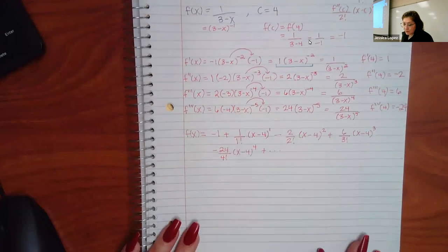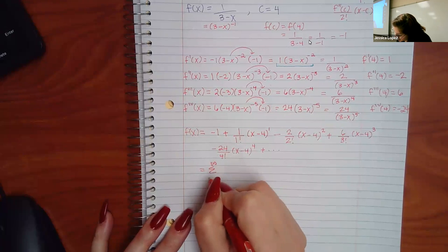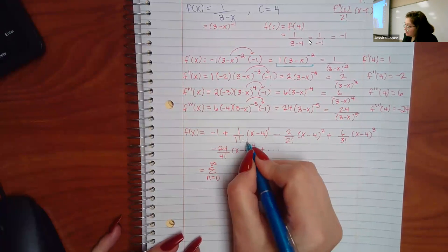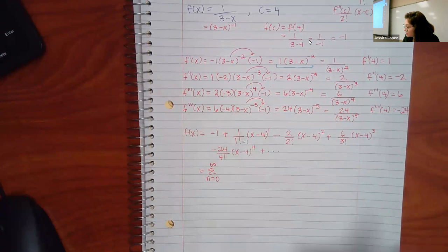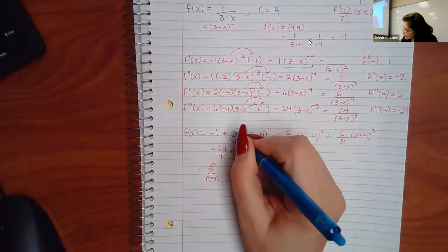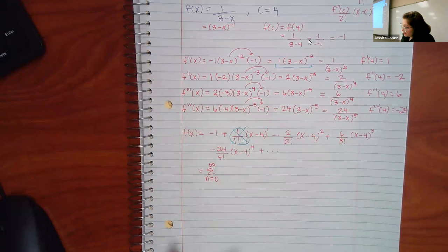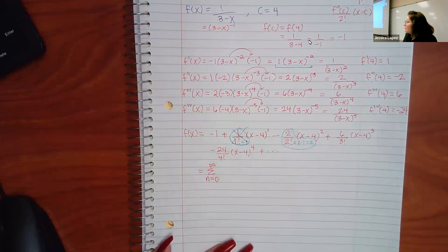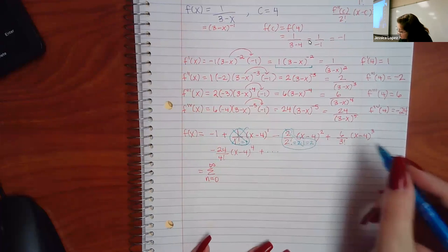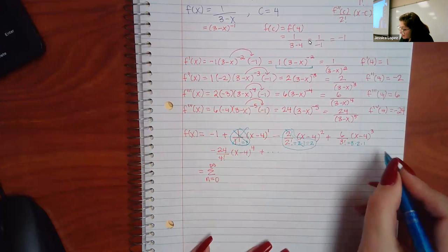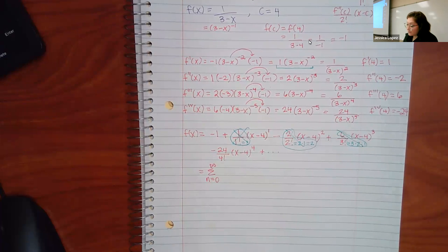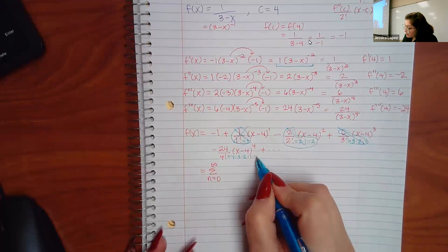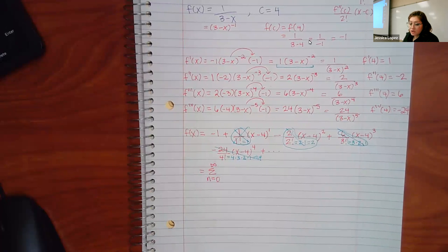Something interesting happens: 1 factorial is 1, so it cancels with 1 in the numerator. 2 factorial is 2, which cancels with the 2 up there. 3 factorial is 6, which cancels with the 6. 4 factorial is 24, which cancels with the 24. So all those factorials cancel out, leaving just 1 in the numerator each time.